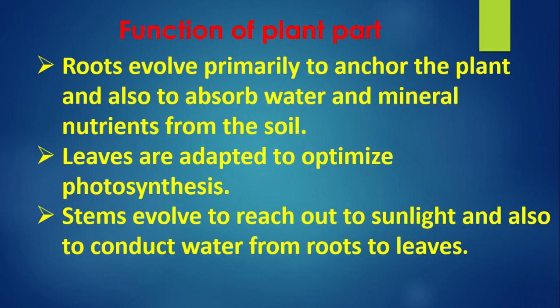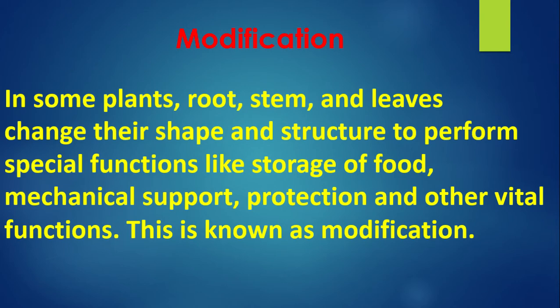Function of plant parts: Roots evolved primarily to anchor the plant and also to absorb water and mineral nutrients from the soil. Leaves are adapted to optimise photosynthesis. Stems evolved to reach out to sunlight and also to conduct water from roots to leaves. Modification: In some plants, root, stem and leaves change their shape and structure to perform special functions like storage of food, mechanical support, protection and other vital functions. This is known as modification.